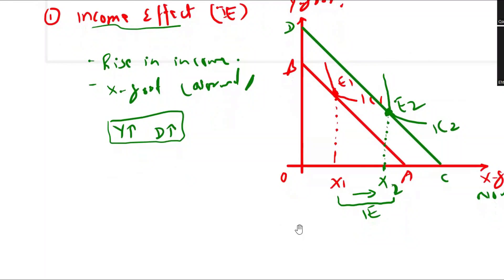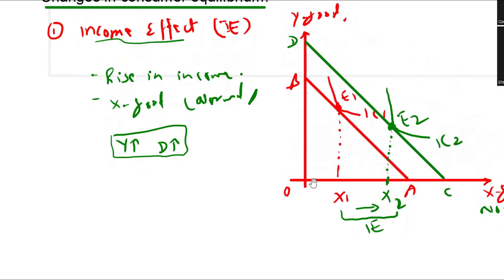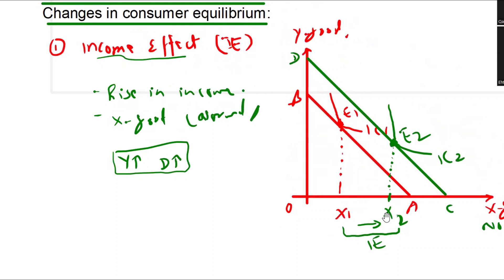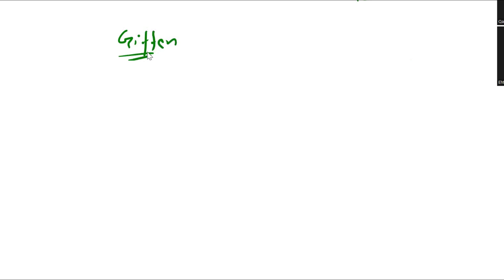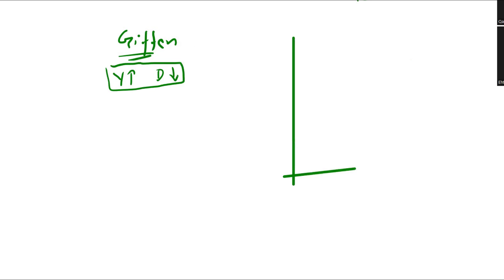We can also consider a Giffen good. If X is a normal good, the consumer purchases more when income increases. But if it is a Giffen good, the situation is quite opposite. Giffen goods are very low quality products — examples include rotten meat and fruit — and the consumer purchases less of them whenever income increases, because these are the worst quality products and consumers only buy them when their purchasing power is low.